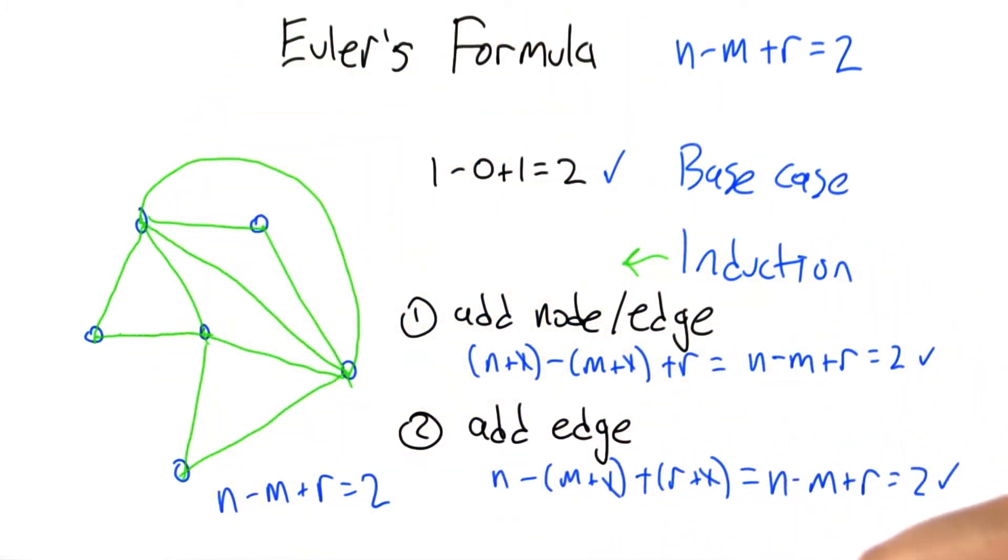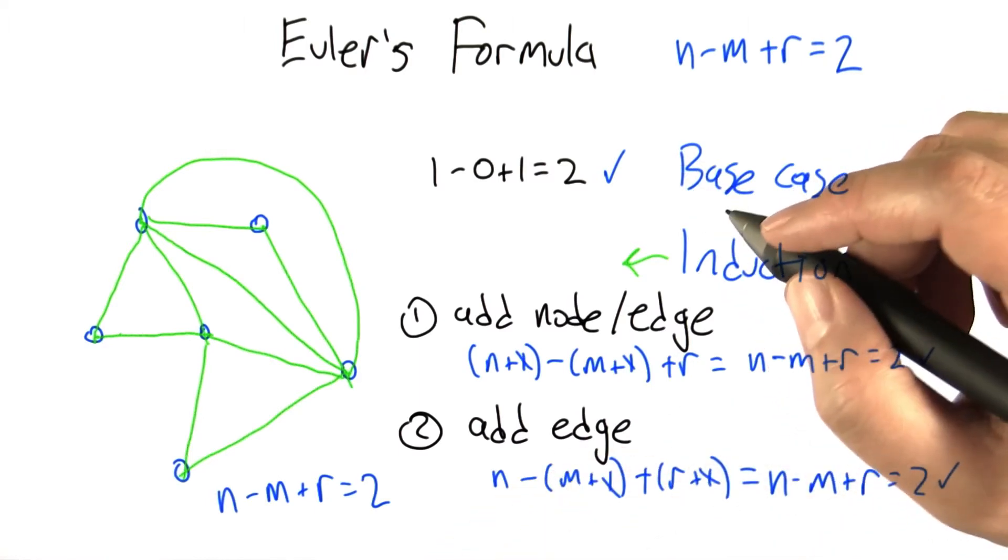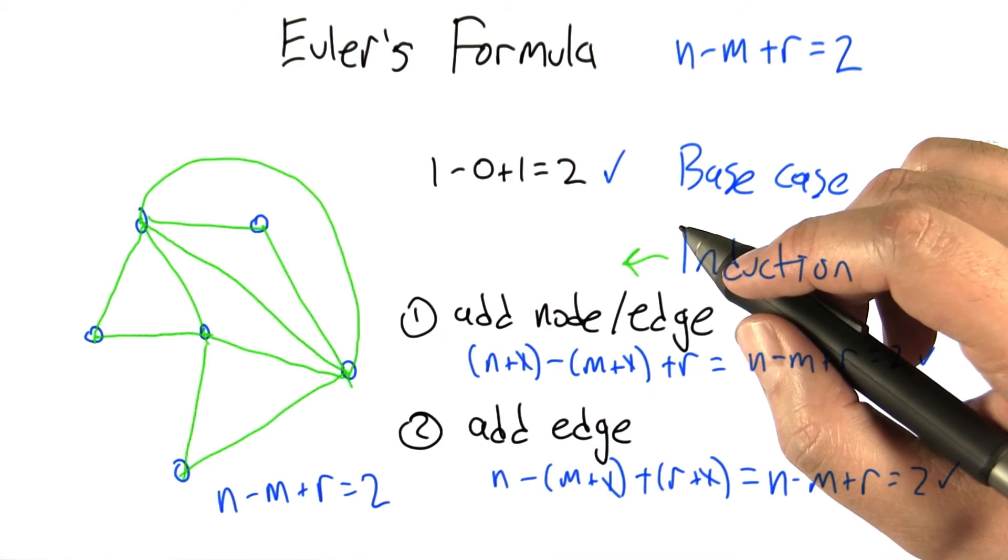If we add an edge and a node together, the region stays the same, but the number of nodes goes up by 1. So no matter what you do, this formula keeps holding. Pretty cool.